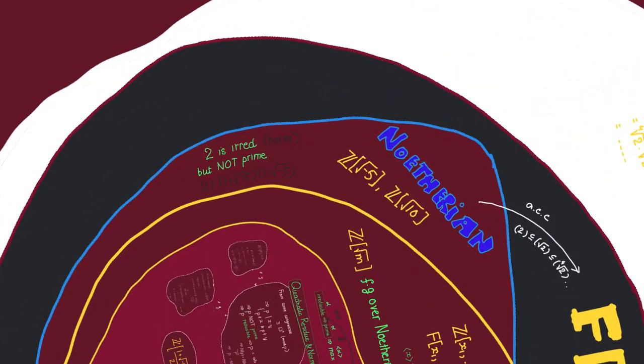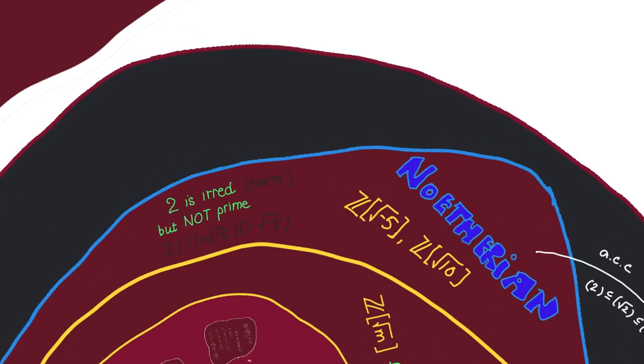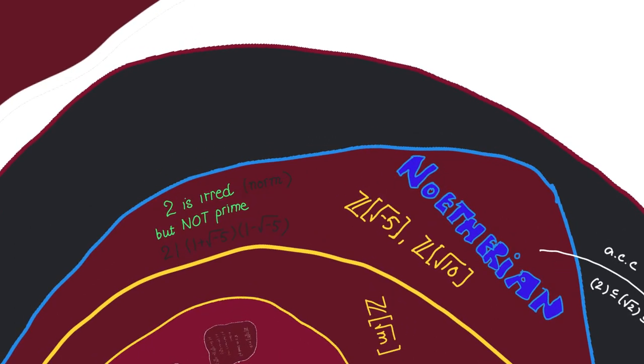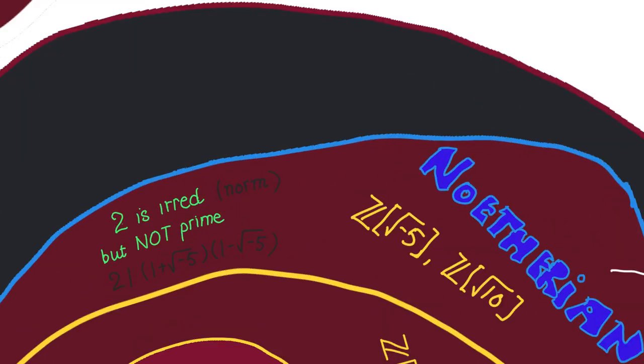For example, let's look at ℤ adjoined square root of -5. In that ring, 2 is irreducible — you can see that by checking its norm. But it's not a prime, because it divides a certain product.